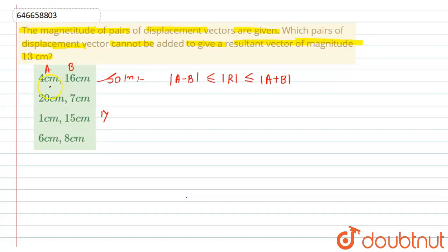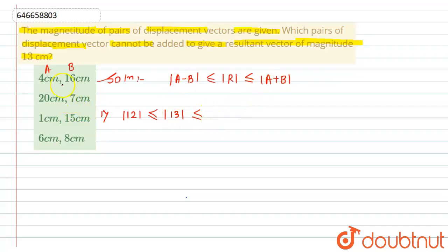For the first option, A − B gives |16 − 4| = 12, which is the minimum value. The resultant magnitude 13 must be between 12 and the maximum value 16 + 4 = 20. Since 13 lies within this range, this option satisfies the condition and is not our required answer.